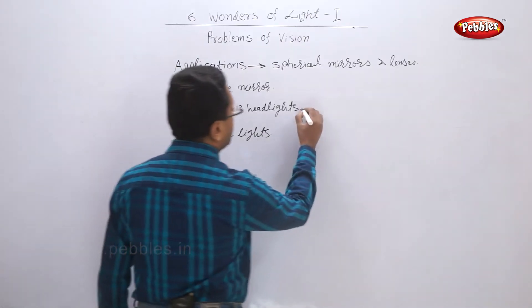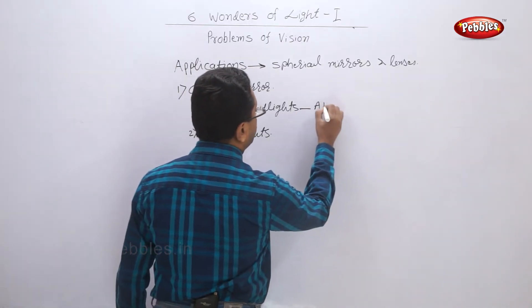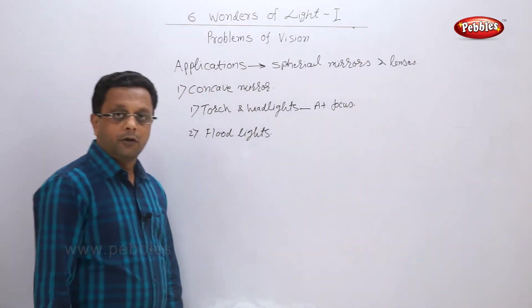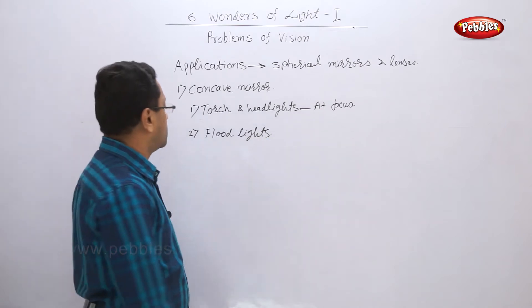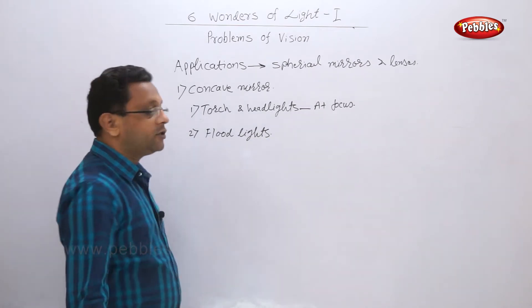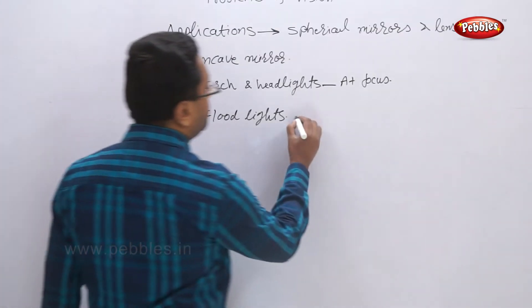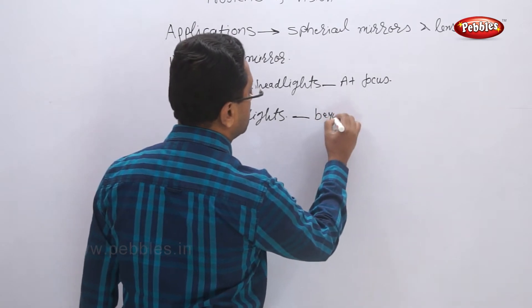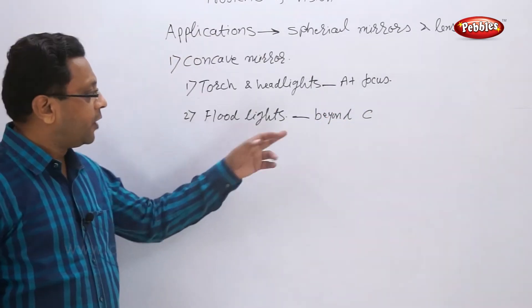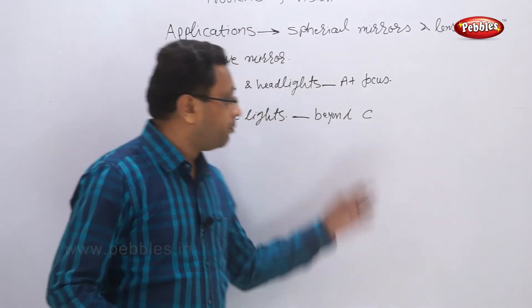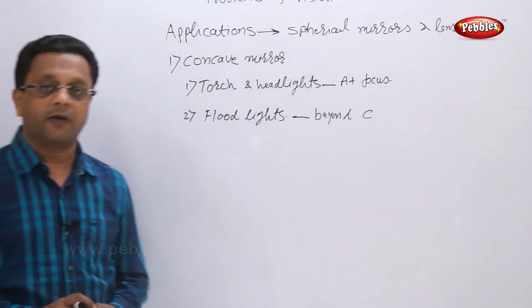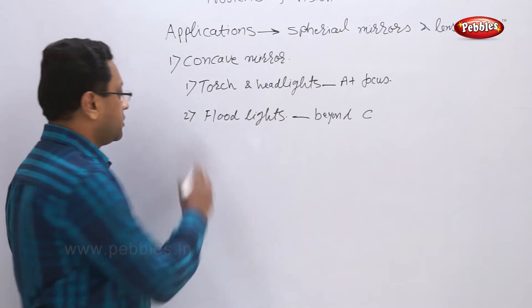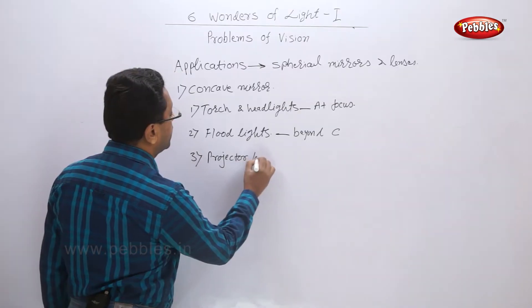The second application is in flood lights. In torches the source of light is at the focus, but in flood lights the light source is kept beyond the center of curvature. So we will get an intense beam of light.